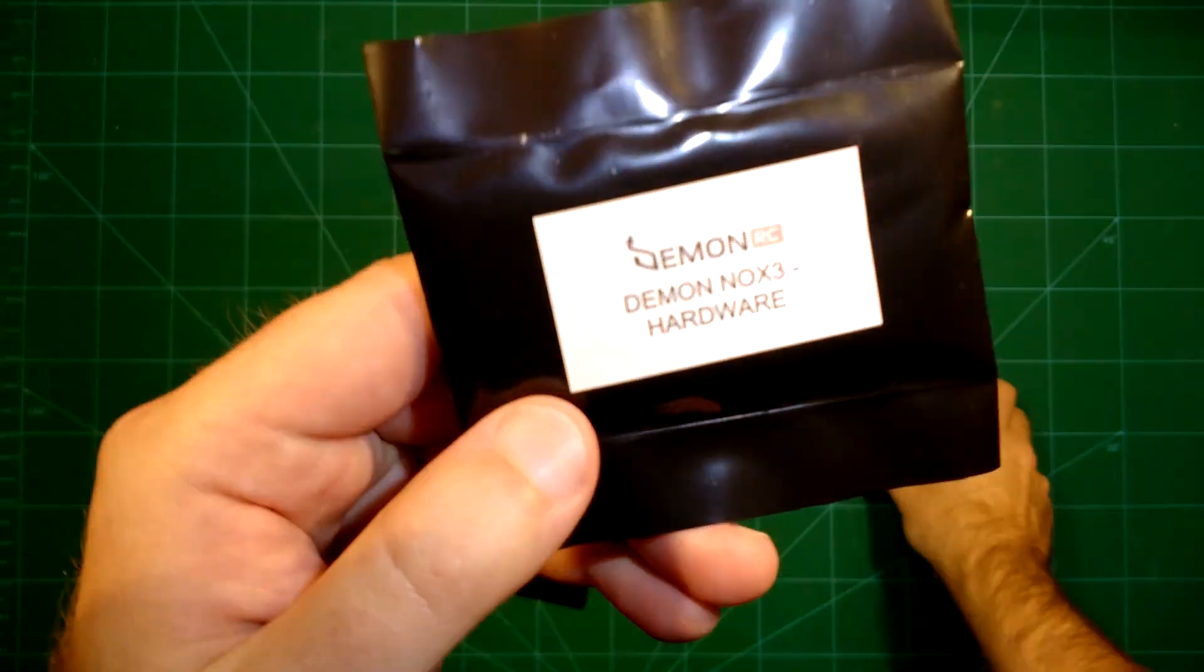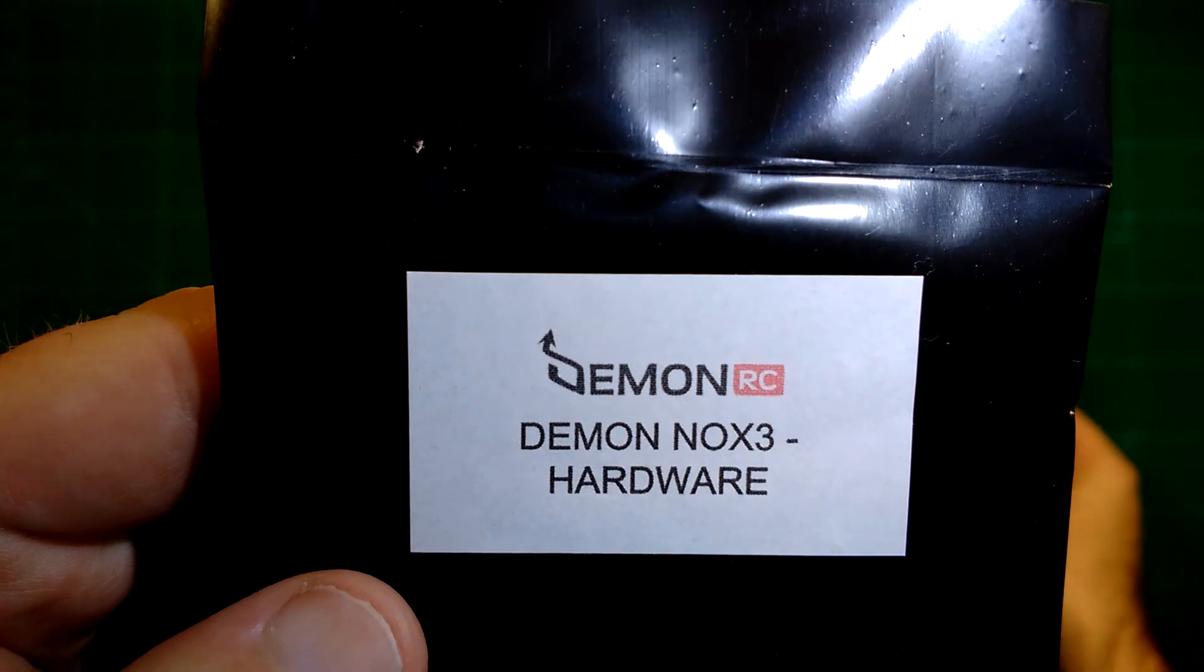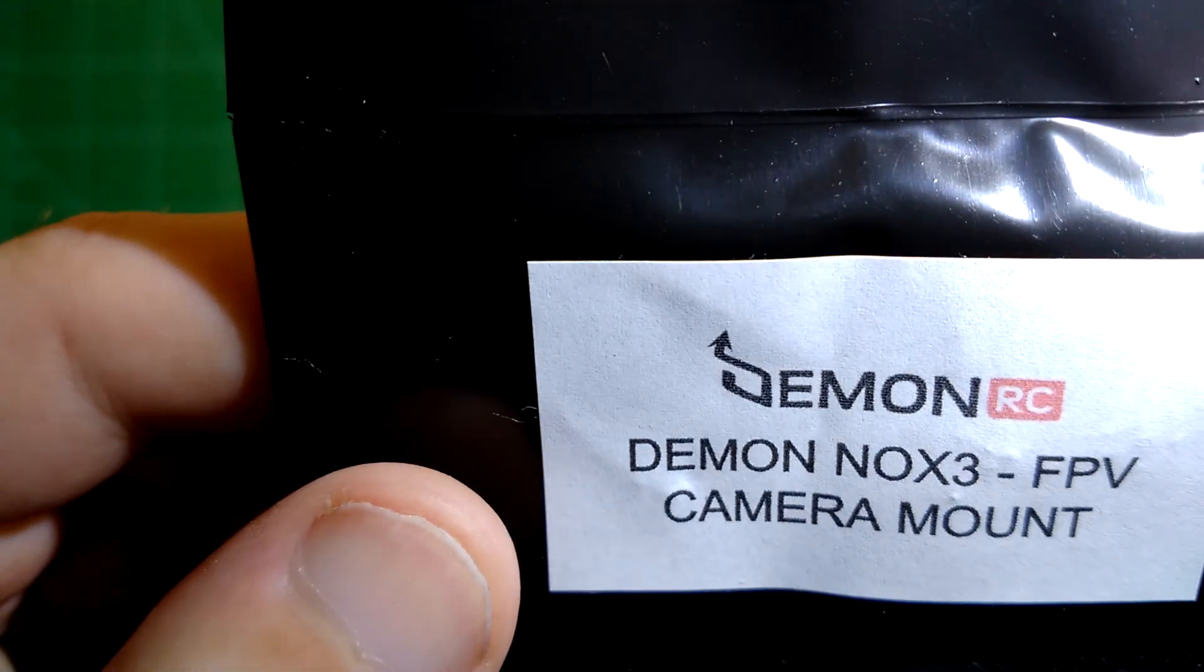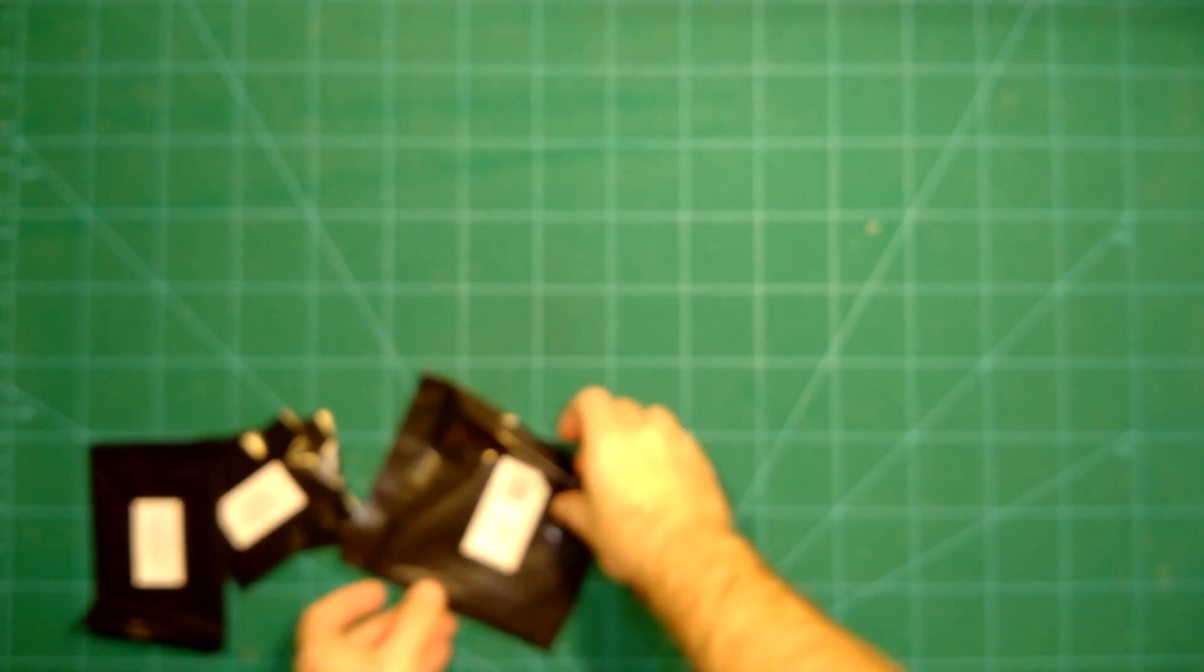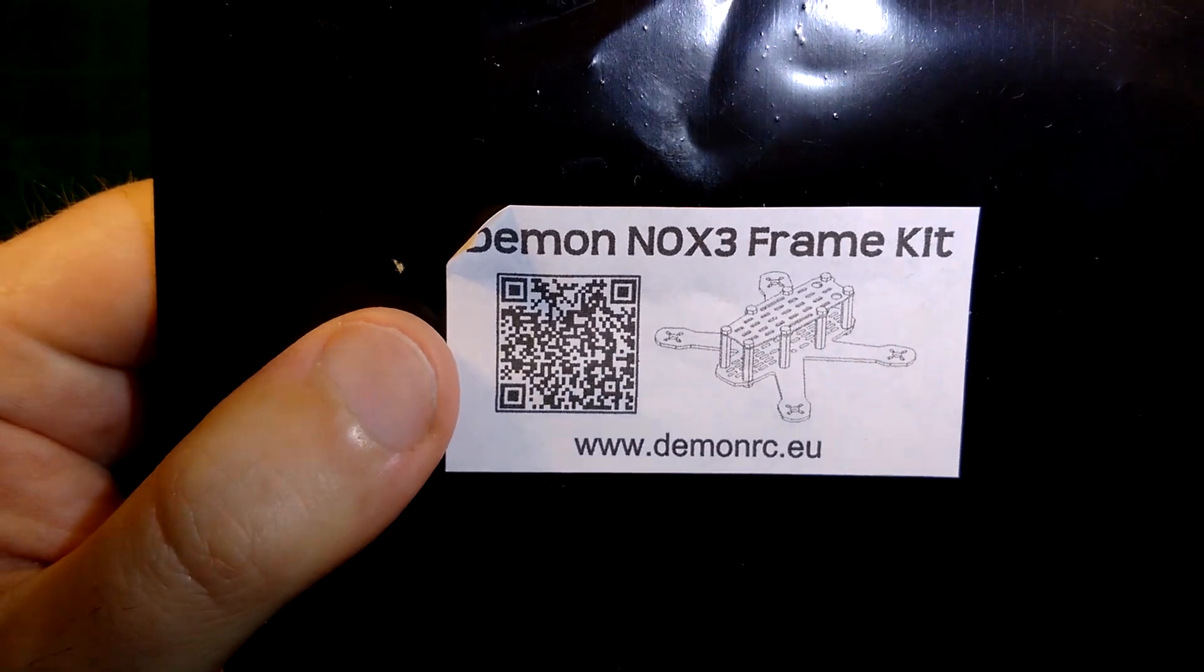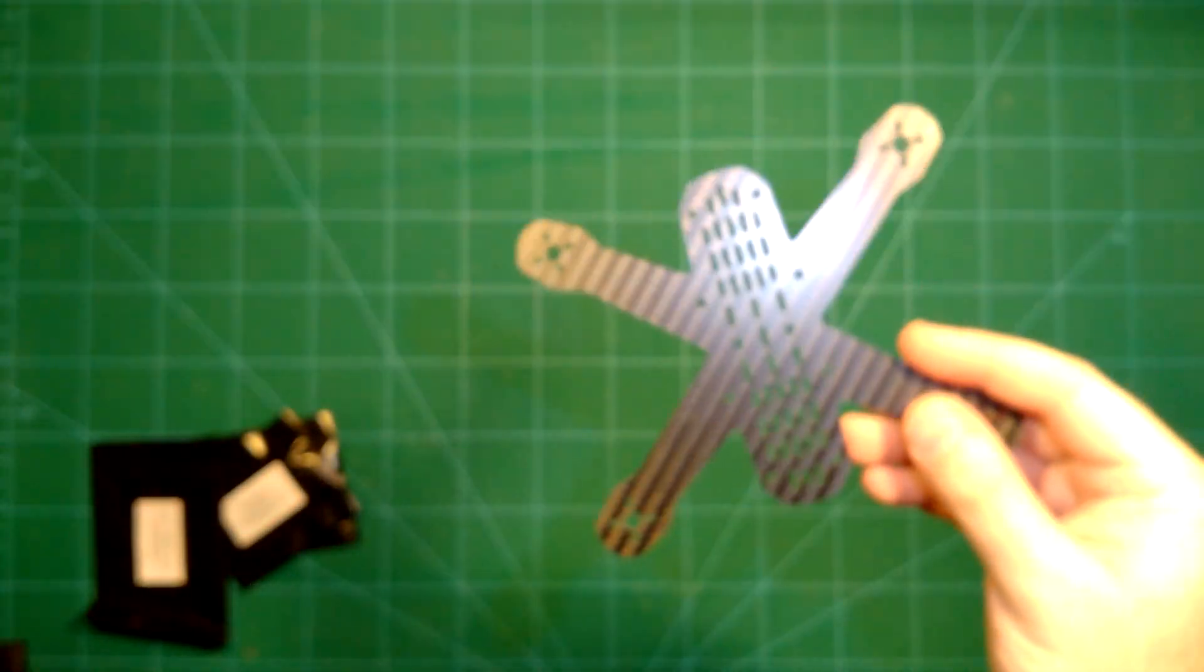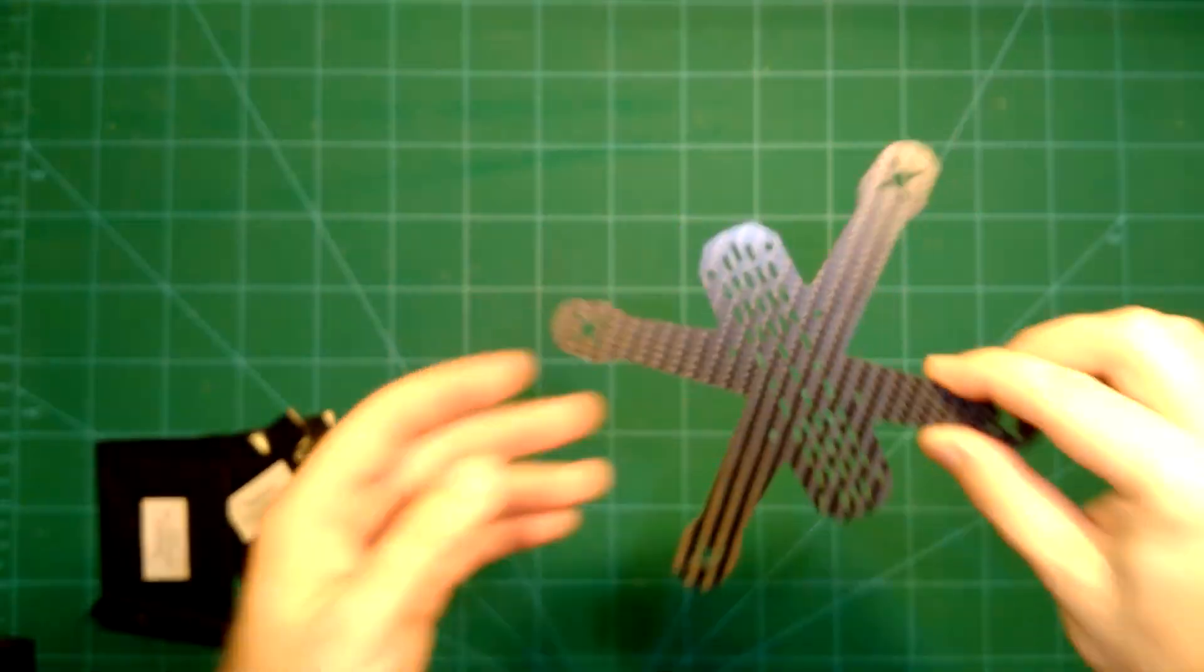We have here nicely labelled the daemon nox3 hardware, camera, then the FPV camera mount, the top plate and finally something which I have already opened, the frame kit. This is the bottom plate. Let's just unbox all of these.